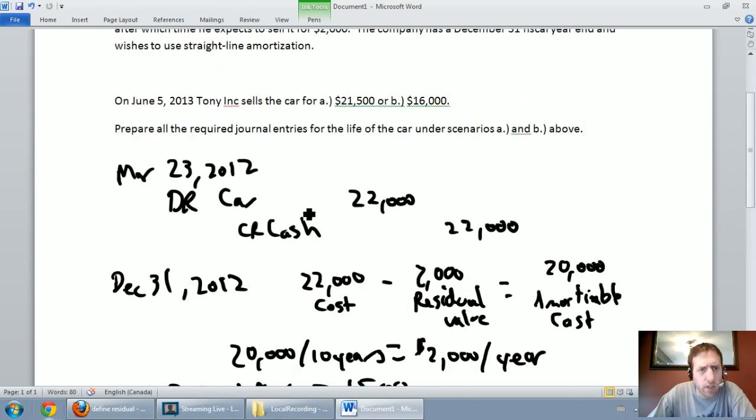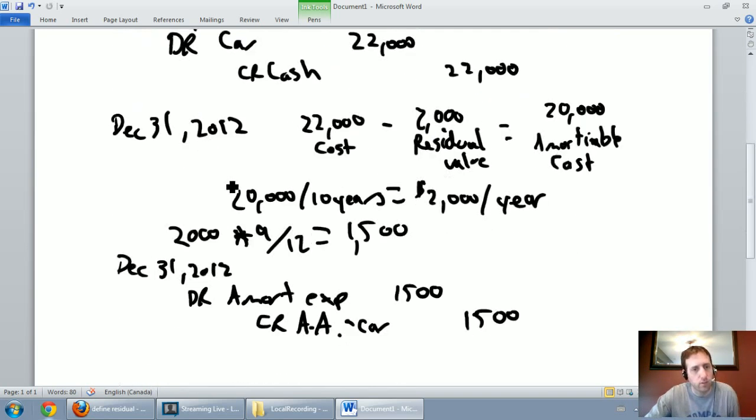So we've done basic amortization. Now in the question it tells us on June 5th, 2013, and we'll do part A first, Tony Inc. sells the car for $21,500. So before we actually sell the car, we need to amortize it up to the date of the sale. So I've already amortized it to December 31st, 2012. I need to record amortization between December 31st, 2012 and when I sell it and so that would mean I need to record amortization for December 31st to June 5th, I need to record it for January, February, March, April, May. Again I round to the nearest month so I'm not going to count June. I need to amortize this asset for five months.